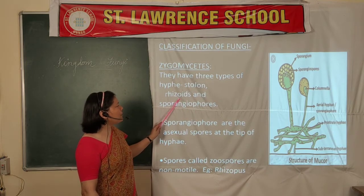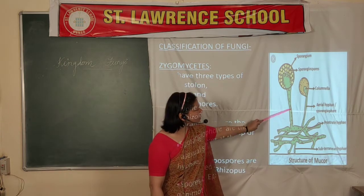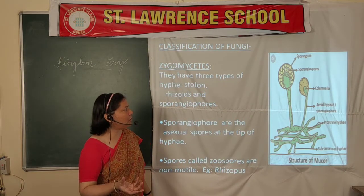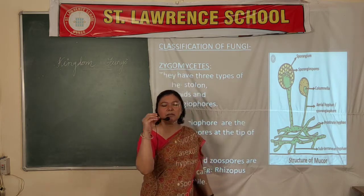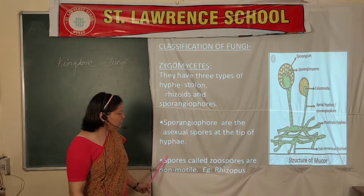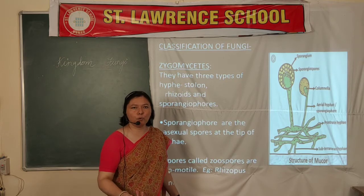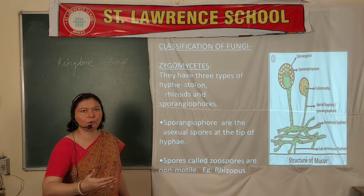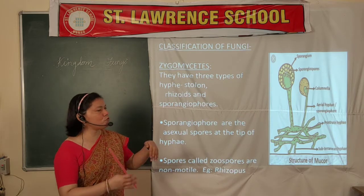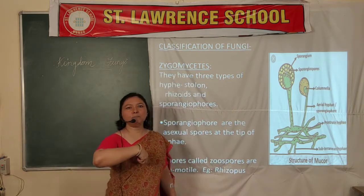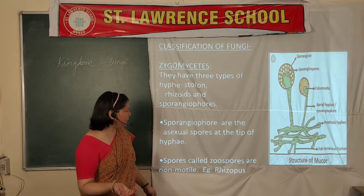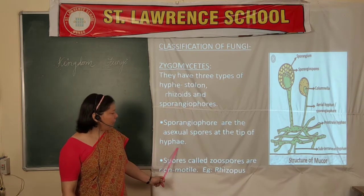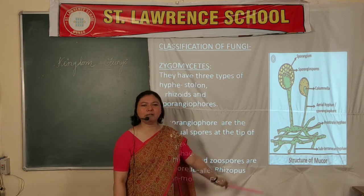In short, the three hyphae types are stolon, rhizoid, and sporangiophore. The sporangiophore is the erect or upright hyphae that ends up forming a sporangium — a sac-like structure on top — within which spores are formed. These spores are zoospores and are non-motile; they cannot move on their own. When the wall of the sporangium bursts, all spores are scattered. The sporangiophores are asexual spores at the tip of the hyphae. Examples include Mucor and Rhizopus.